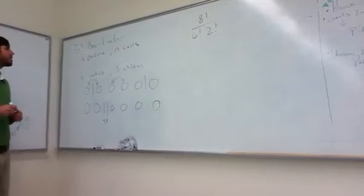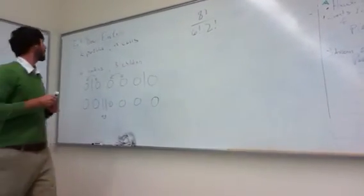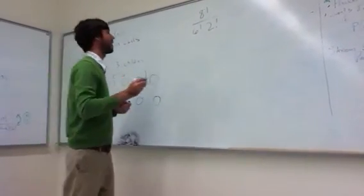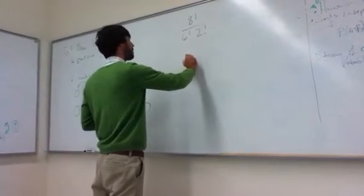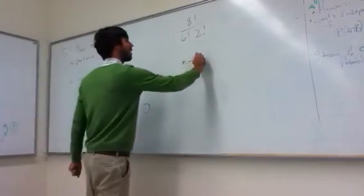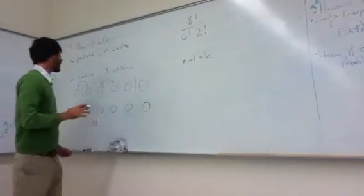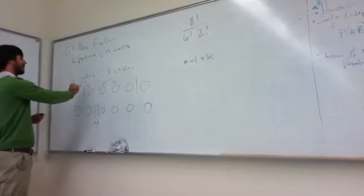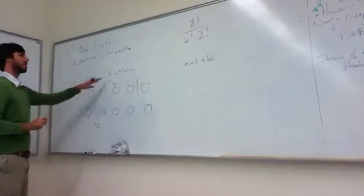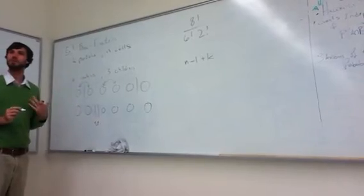So if you think about how we argue this in general, if I have k particles and n cells, then where did we get the numerator? Well, first we lined up all k cells, and I needed to lay out n minus one distributors. Just like here we needed to lay out two distributors to specify the outcomes for three children.